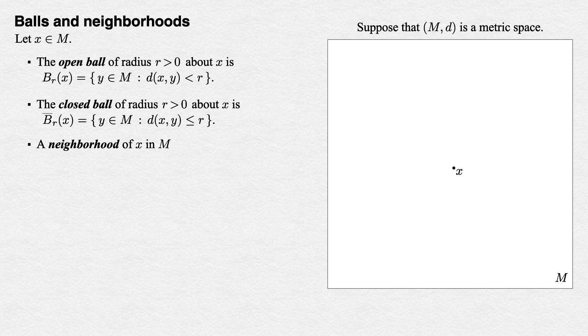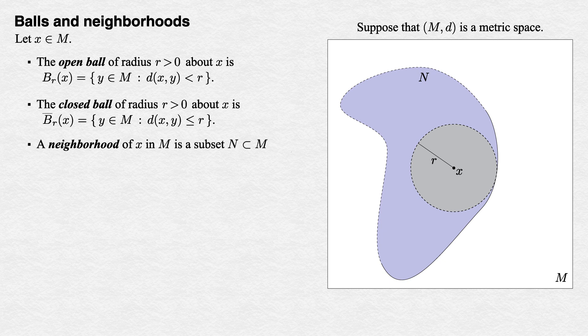In general, a neighborhood of x consists of all of the points in some open ball of positive radius around x. This is the important part. It may also include whatever other points of M that it likes. Our precise logical definition is that a neighborhood of x in M is a subset N of M for which there exists r > 0 such that B_r(x) is contained in N, which expresses exactly what we first said. It's a subset of M that contains some open ball of positive radius about x.